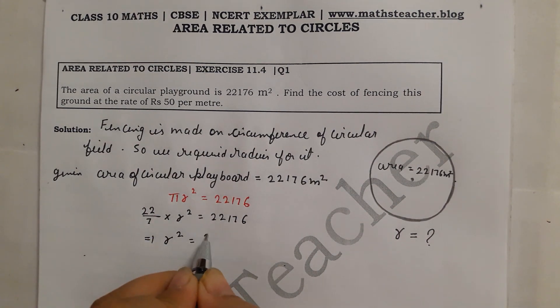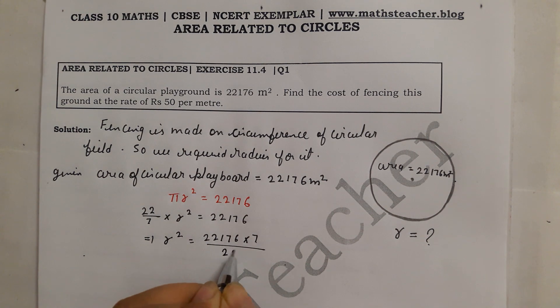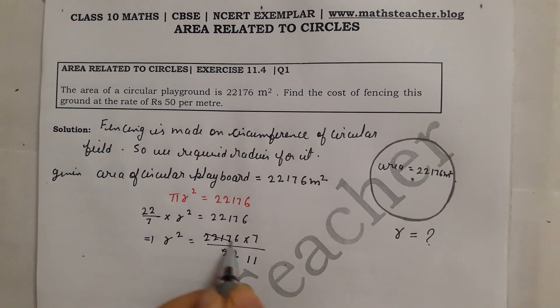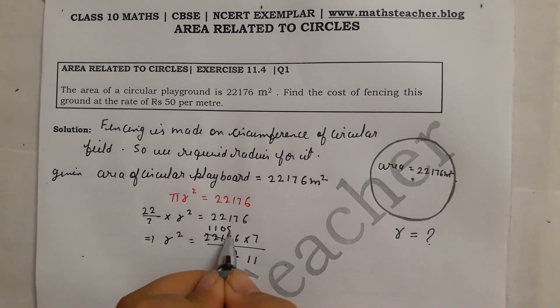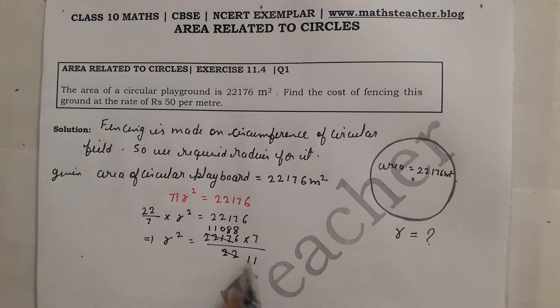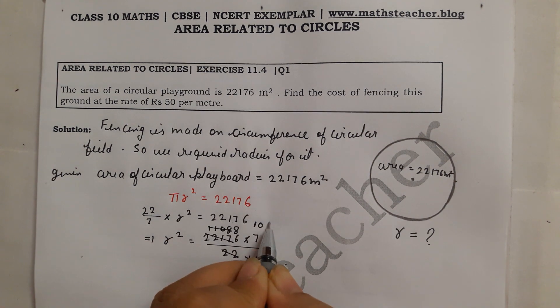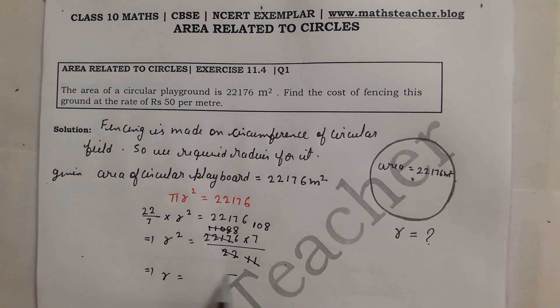In this we know the value of pi, we need to find r, and this area value is given here as 22,176. We have one variable, we will easily solve. We will keep this variable on one side and shift the 22,176, so what is in the denominator will go to the numerator and what is in the numerator will go to the denominator. Now cancel it here - first we cancel from 2 table, so this will be 11 times and this will be 1,1,08. Then 7 cancels, so it will be 108 x 7. So r squared equals 108 x 7.